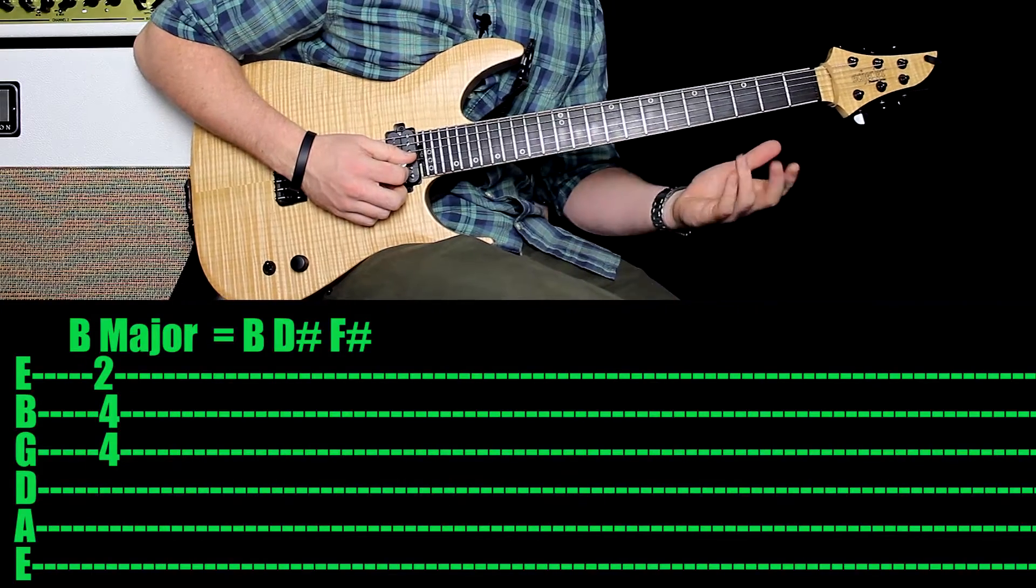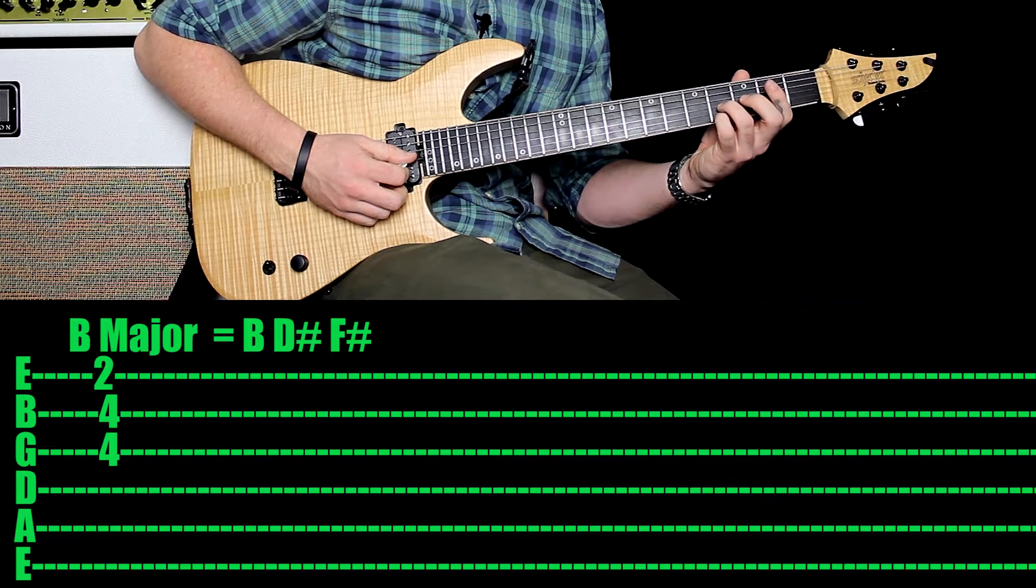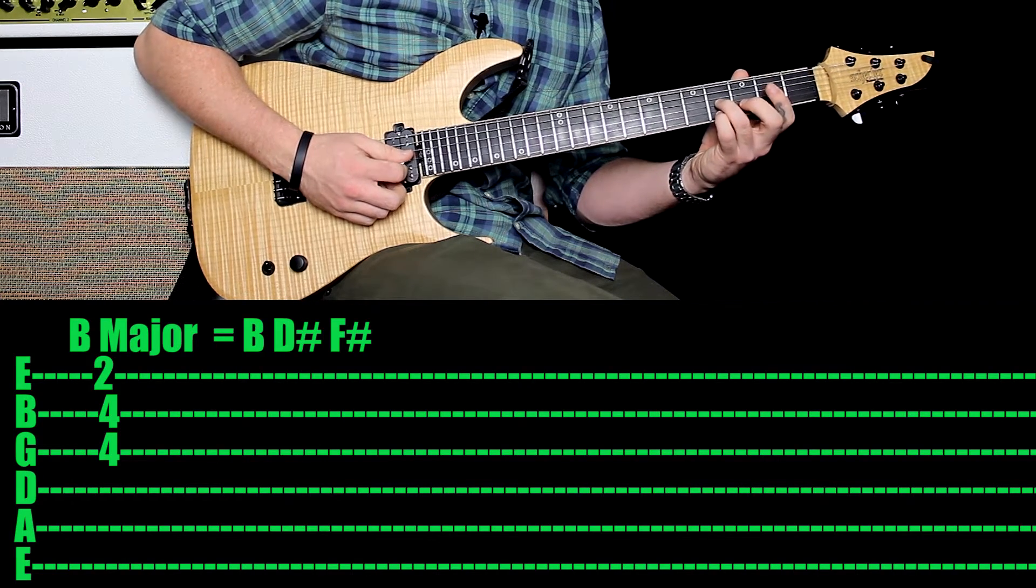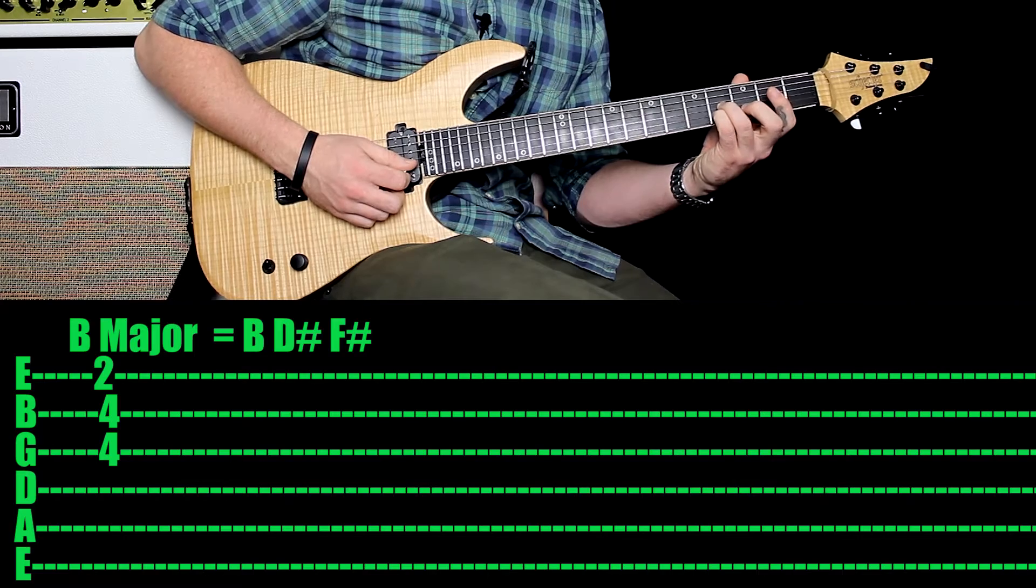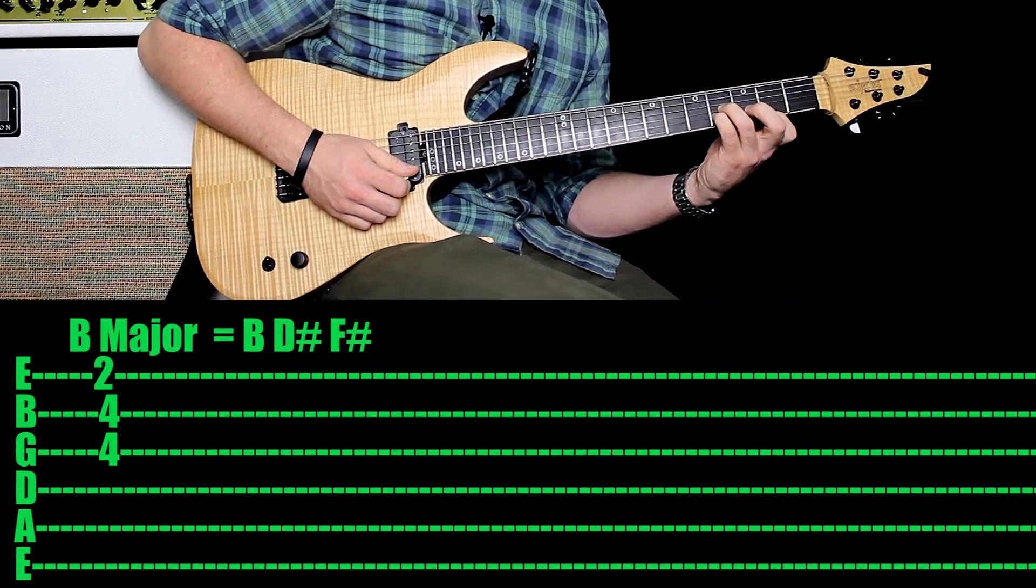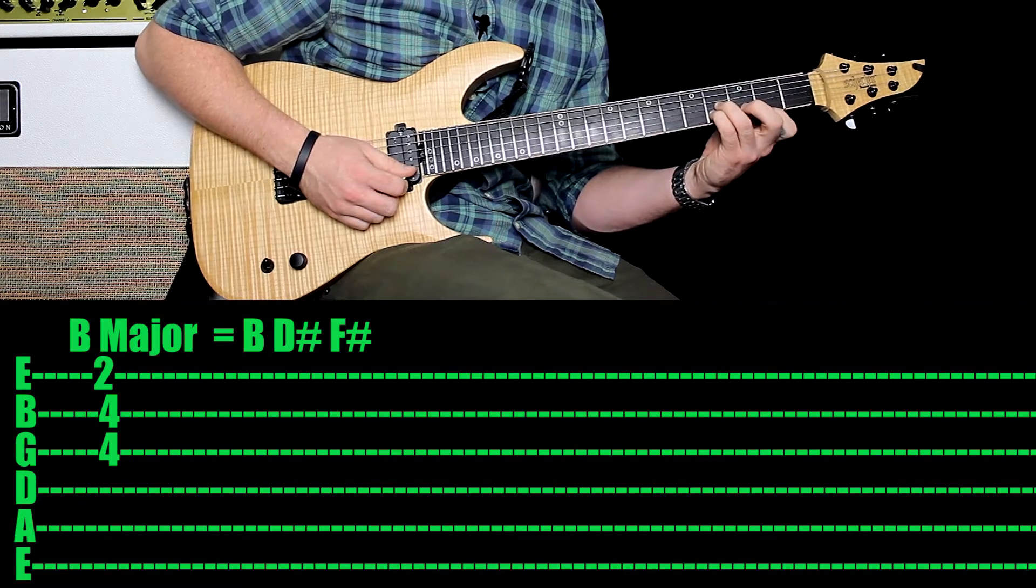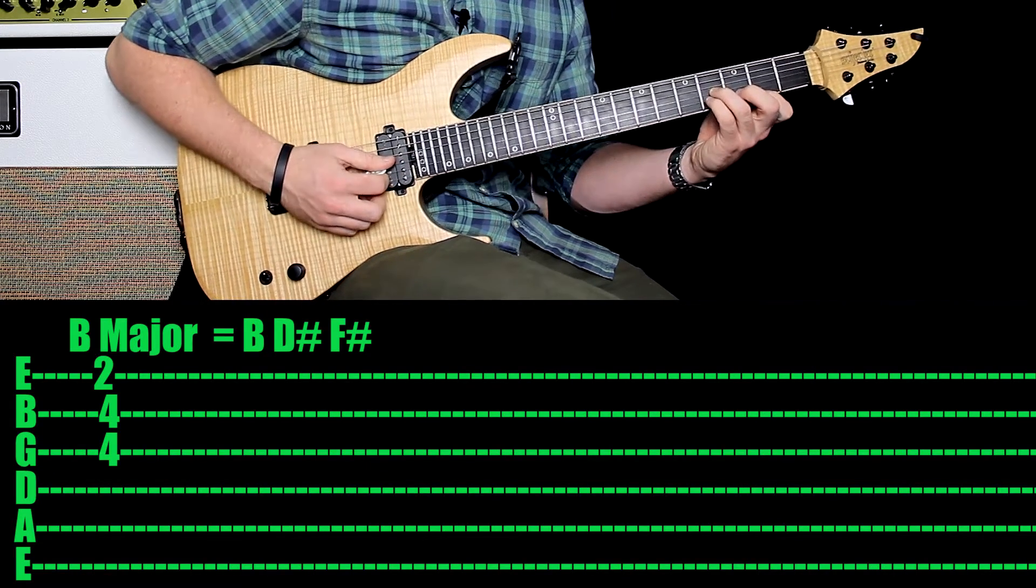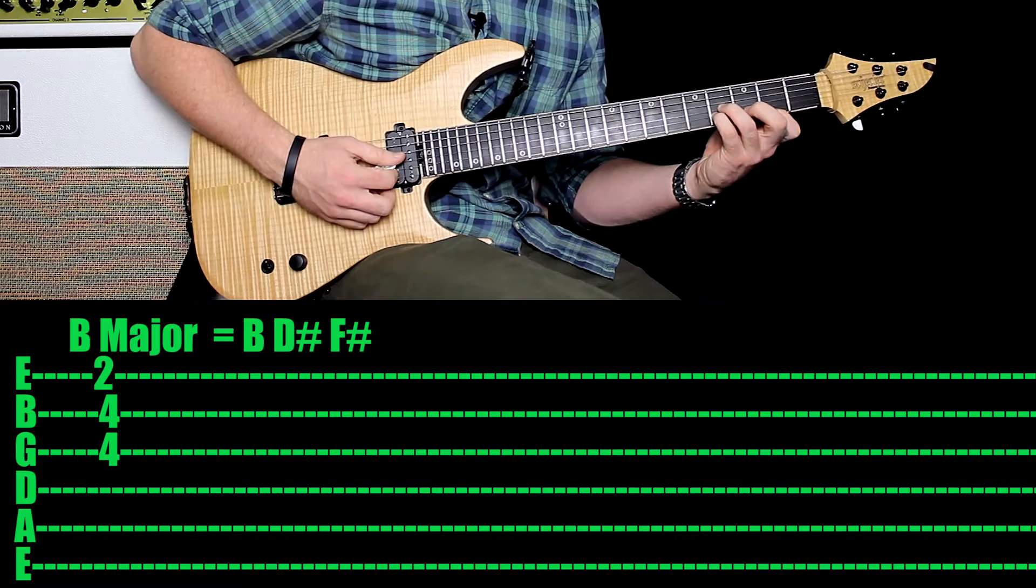You want your third finger on the fourth fret of the third string, that's your B note. Directly underneath it, you want your pinky on the fourth fret of the second string, that's your D sharp. A little bit of a stretch, you want your first finger on the second fret of the first string, that's your F sharp. That's it, you just want to play those three notes.